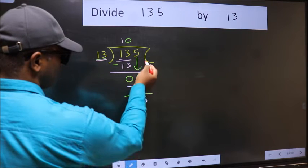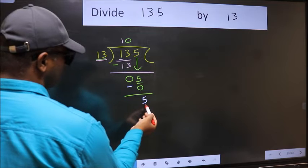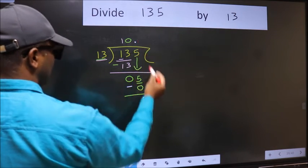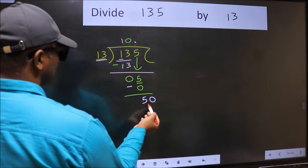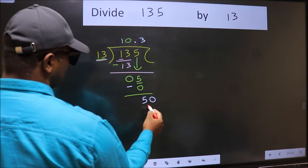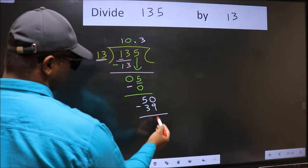Over here, we did not bring any number down. And 5 is smaller than 13. So now we can put dot and take 0. So 50. A number close to 15 in 13 table is, 13 threes, 39. Now we should subtract. We get 11.